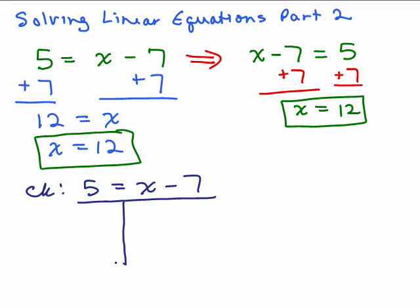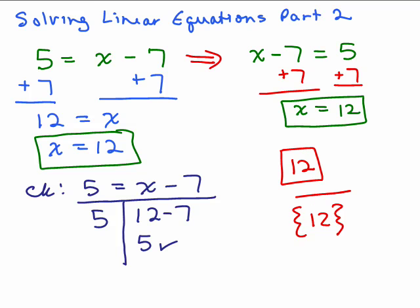And underline, make the T. And on the left side, there's nothing to plug in for x. There's just a 5, so you write the 5, and on the other side, 12 minus 7, and simplify it using order of operation. Same number on both sides means 12 is the answer. So, you can write the answer, the answer's just 12, or you could put it in braces, which is the more formal way of writing the solution.